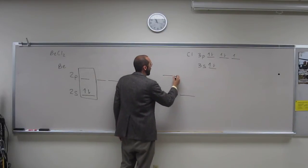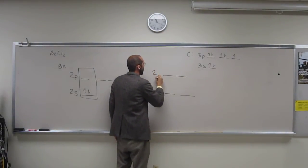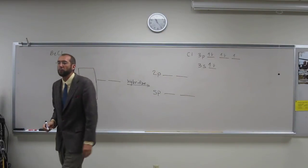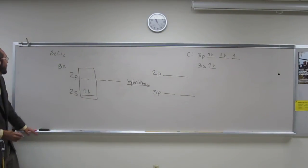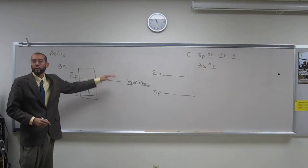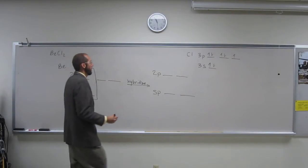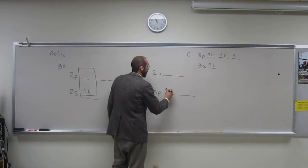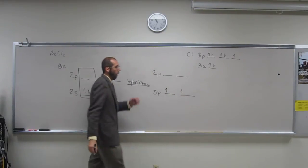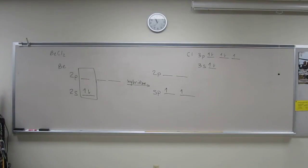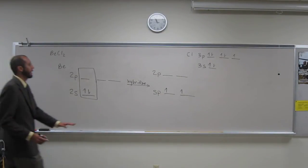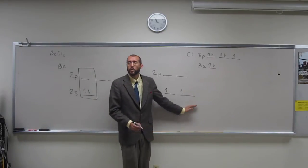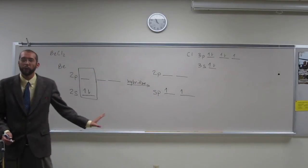It's also still got its two p orbitals that we didn't use that are still higher in energy. So when we fill this, using all the various rules of filling electron orbital diagrams that you know, we should get those two electrons now being split up into each one of those sp orbitals. Is that okay with everybody?